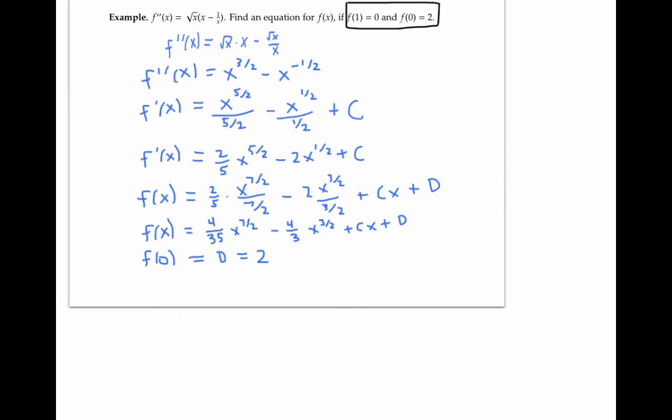So I can rewrite my function, setting D equal to two. And now my second condition says that f of one equals zero. So plugging in one for x, I get 4 35ths minus four thirds plus C plus two, and that has to equal zero.